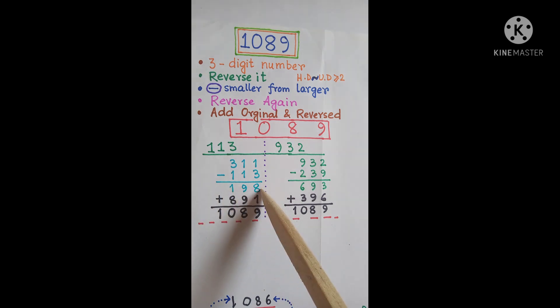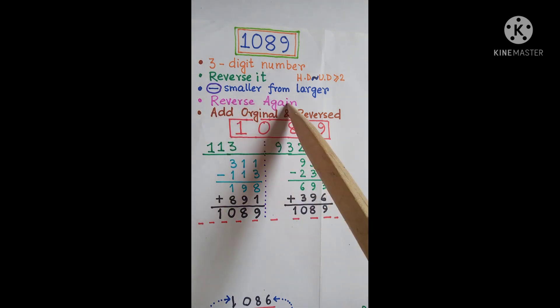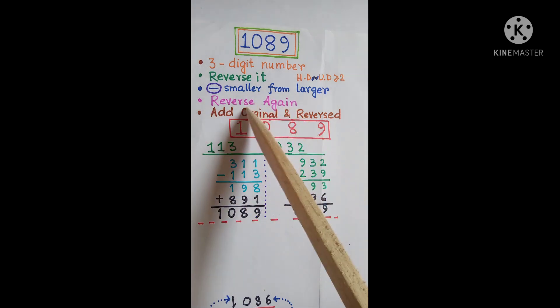After subtracting we will get 198. Then again reverse this number. So that we will get 891. When added we will get 1089.